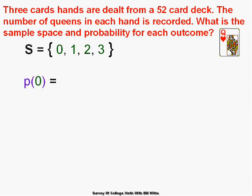The probability of no queens: the sample space is C(52,3) — a combination because order doesn't count in a card hand. The number of ways to get no queens is C(48,3), choosing from the 48 cards that aren't queens. So the probability of no queens is C(48,3) divided by C(52,3).